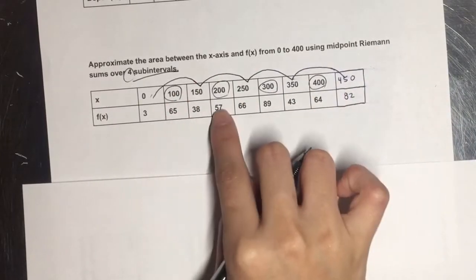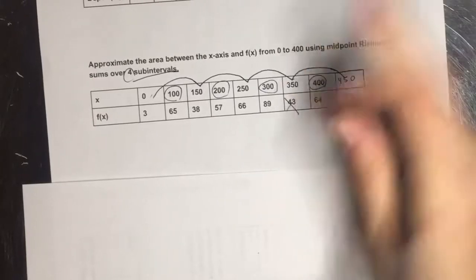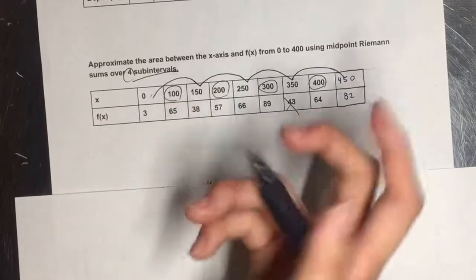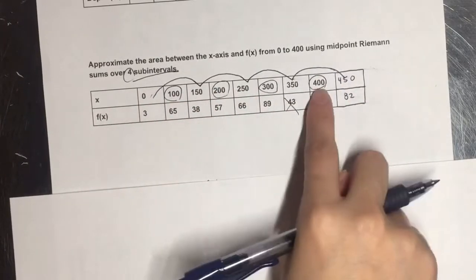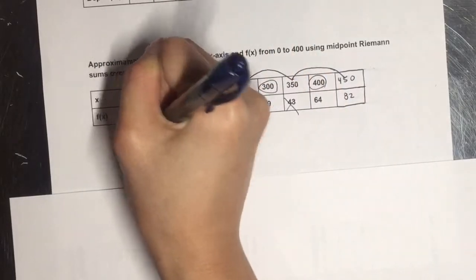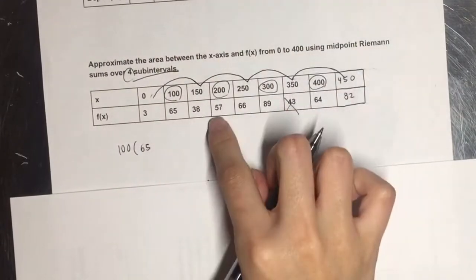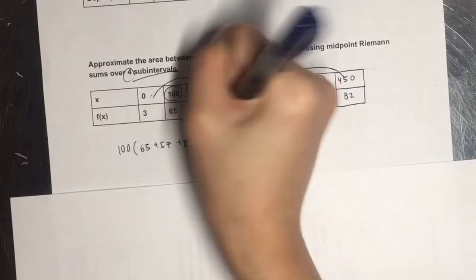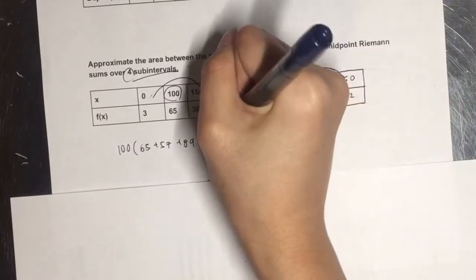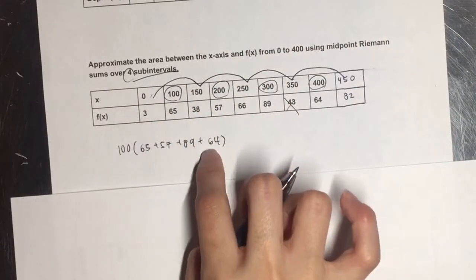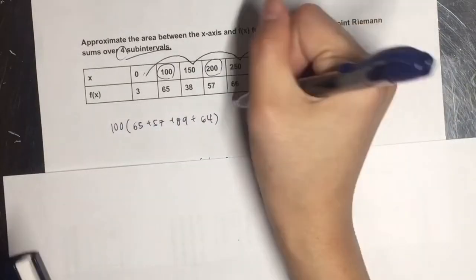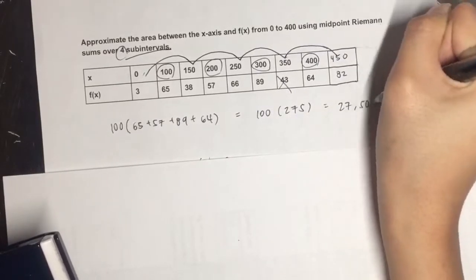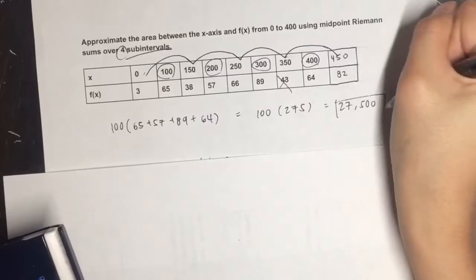When we're doing this, we just have to use the values for those midpoints. We don't have to use the values for like 350. We just have to use those. So we're going to multiply that by the difference in base, which is 100. So it's 100 times 65 plus 57 plus 89 plus 64. That's pretty much the answer. If you want to calculate that, you can. I did. And for my answer, I got 27,500.